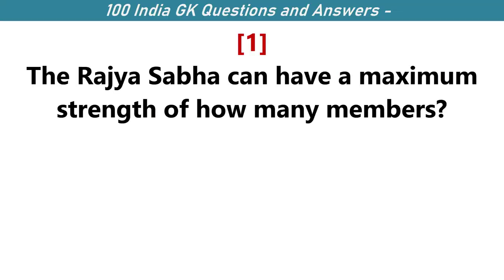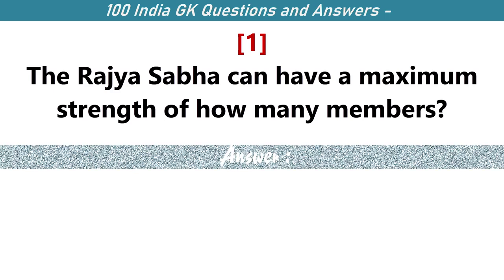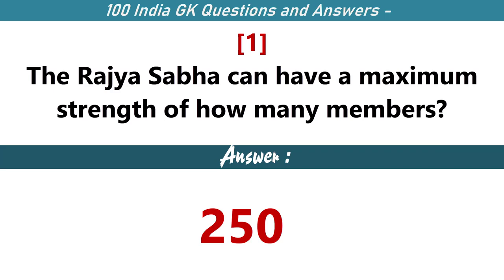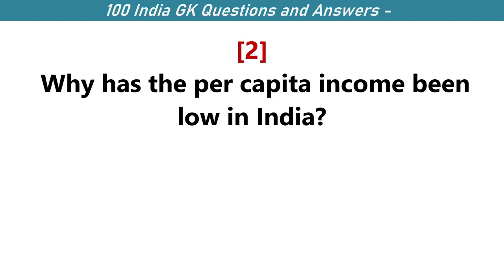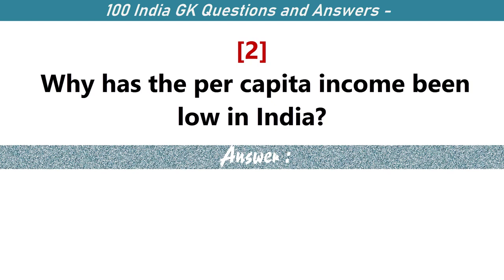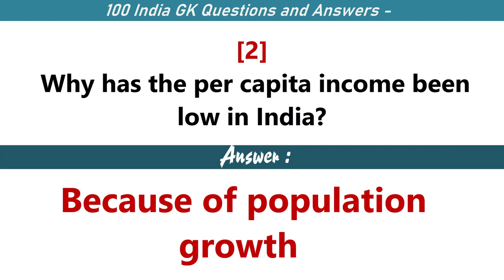The Rajya Sabha can have a maximum strength of how many members? 250. Why has the per capita income been low in India? Because of population growth.